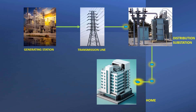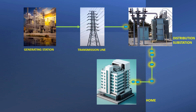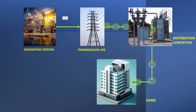The next component is the distribution substation. Its function is directly opposite to that of the step-up transformer — it reduces high voltage to low voltage. For example, in India the three-phase voltage is 440 volts, so the distribution substation reduces the higher voltage down to 440 volts. Step-down transformers are used in the distribution substation, while step-up transformers are used at the generating station.